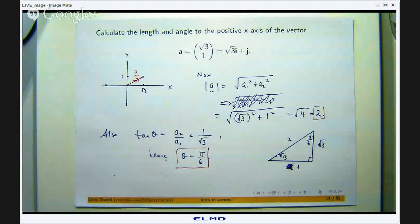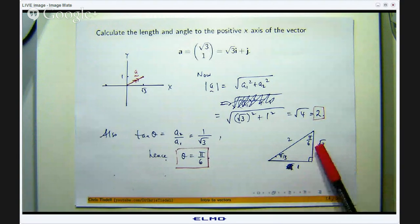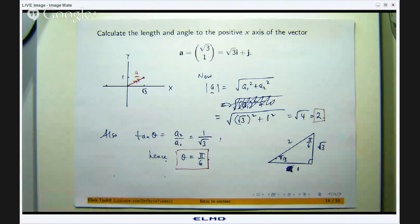Alright, so that is it. Now, I said there were two triangles you need to know. The other triangle is just the one where the angles are π on 4, π on 4 and π on 2. And you have a root 2 as the hypotenuse and the other two sides are 1. So that is a basic example showing you how to calculate the length and the angle of a vector.